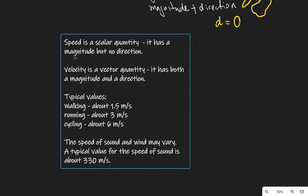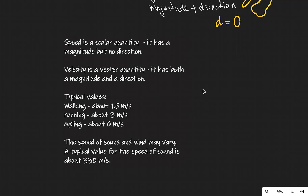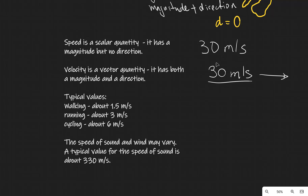Now let's talk about the difference between speed and velocity. Speed is a scalar quantity, meaning it has a magnitude but no direction. For instance, we can say the speed is 30 meters per second, but we don't know in what direction. On the other hand, if the velocity is 30 meters per second horizontally to the right, we know both the magnitude and the direction.